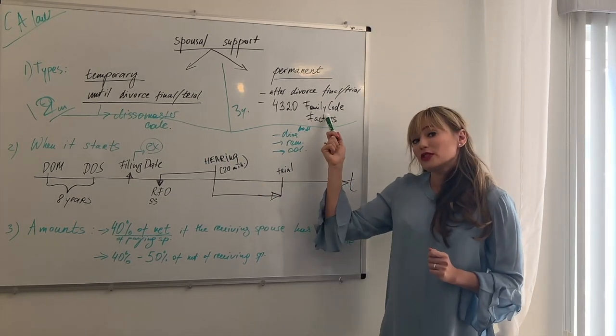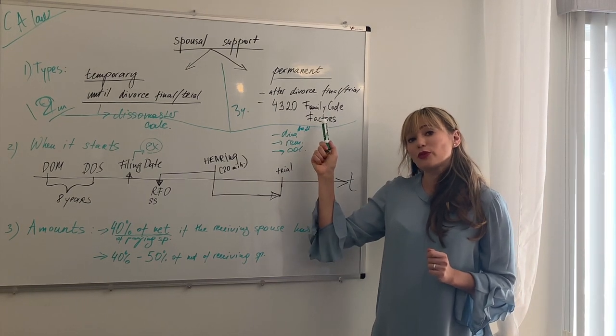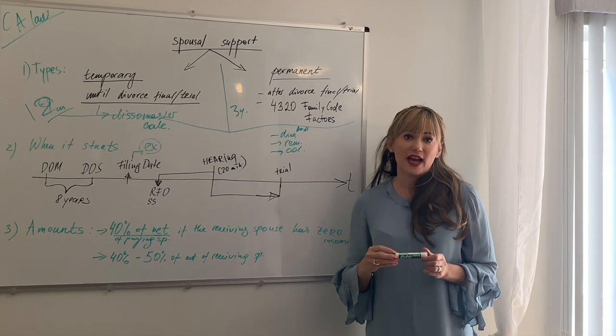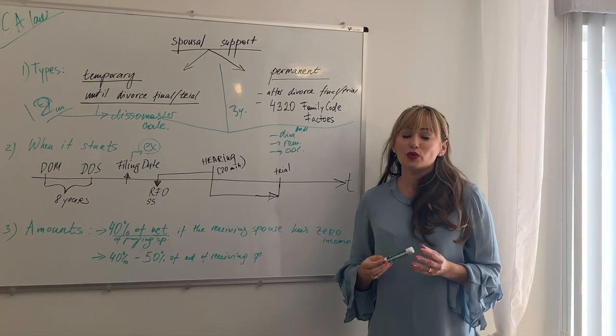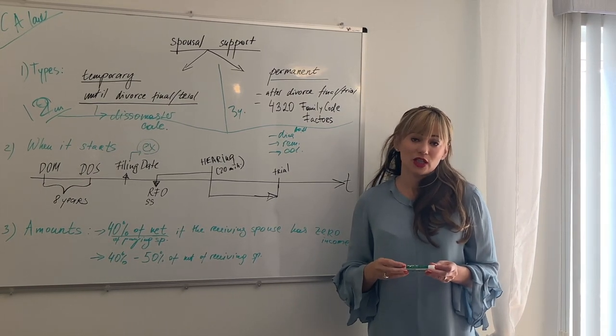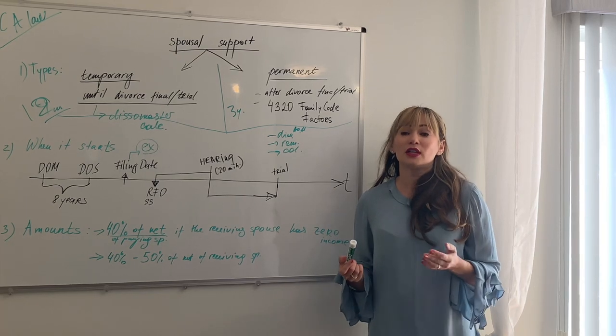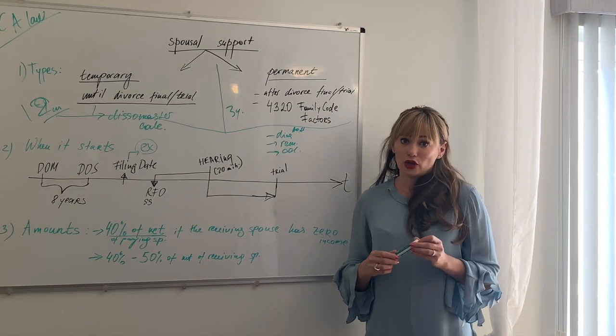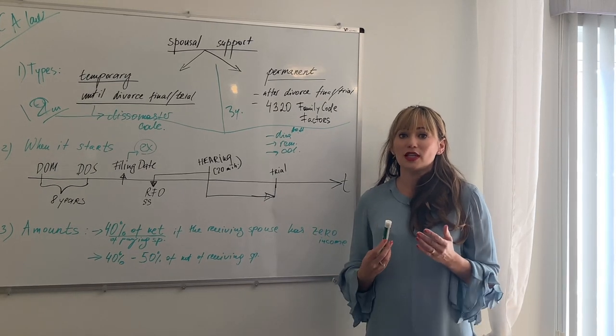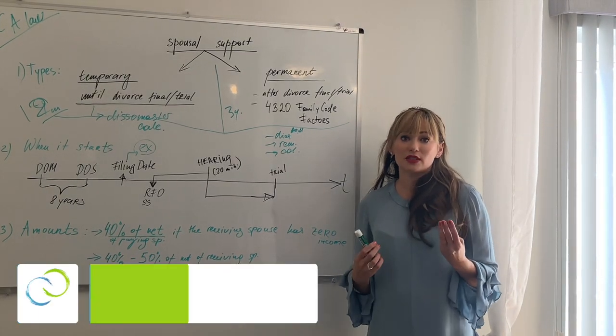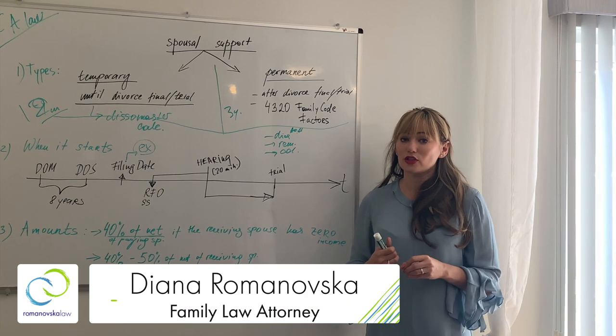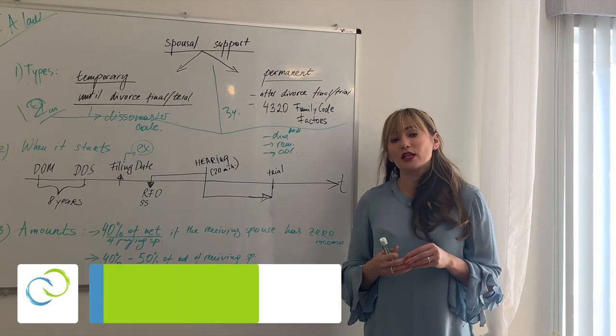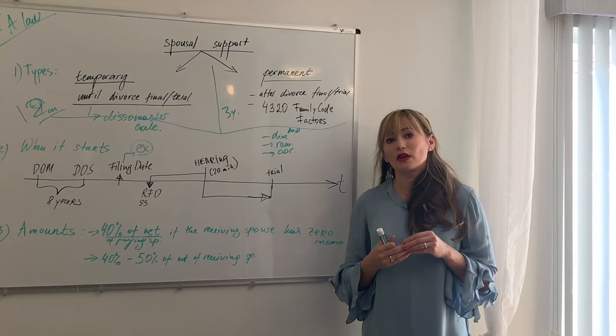What is the formula for permanent support? Permanent support formula is depending on so-called 4320 factors. 4320 is a family code section. You can look it up on Google. It has 20 factors I believe, a very long list. But to sum it up in three factors it would be standard of living during the marriage, need of the receiving party, and ability to pay of the paying party.